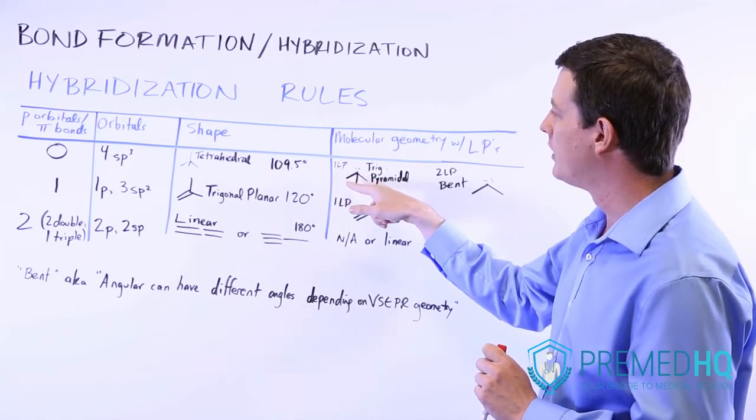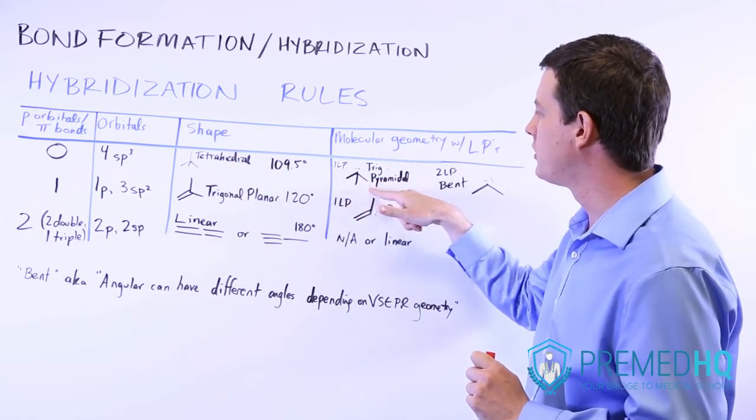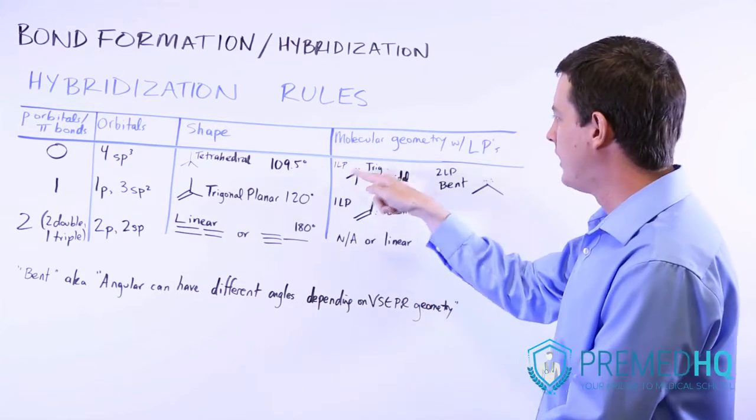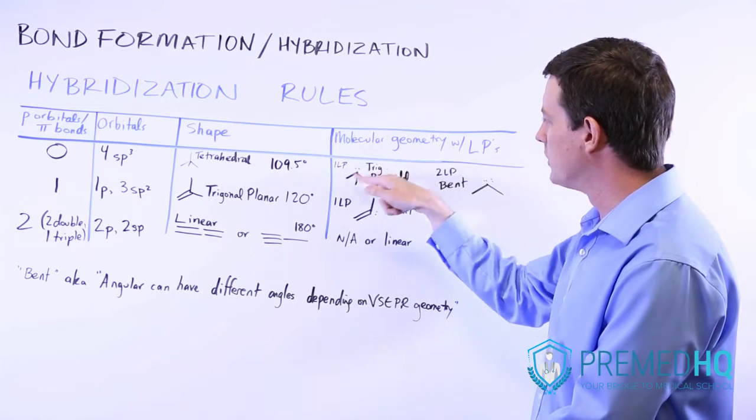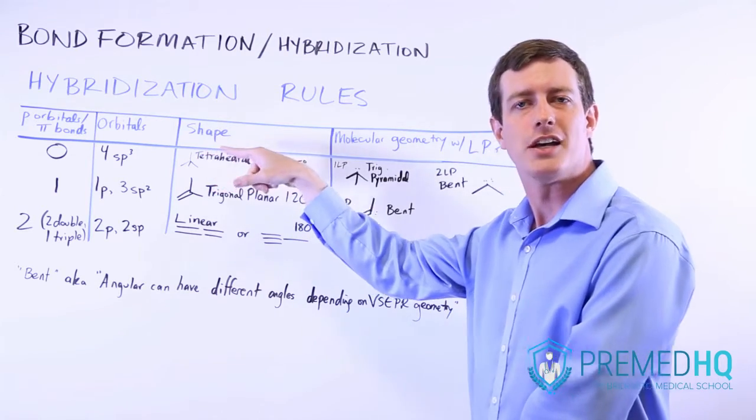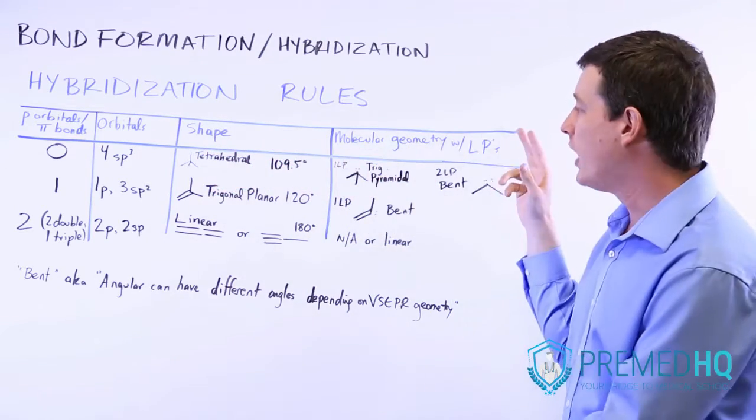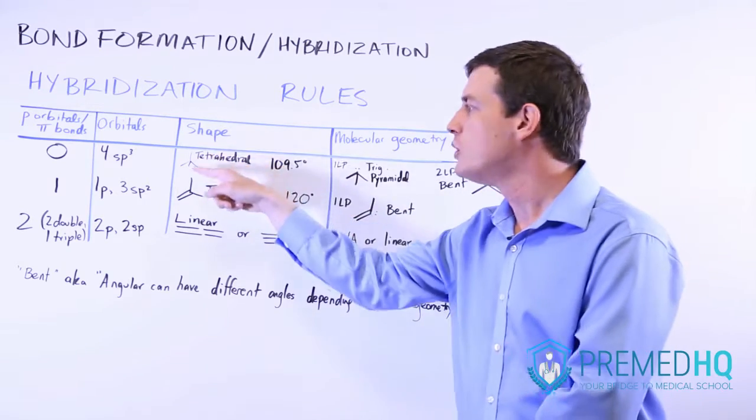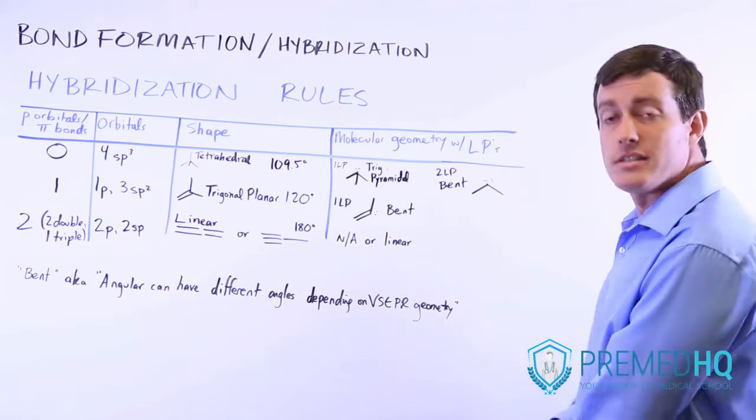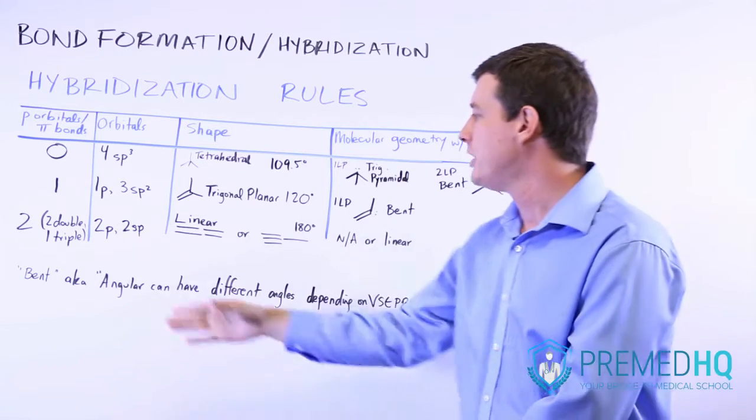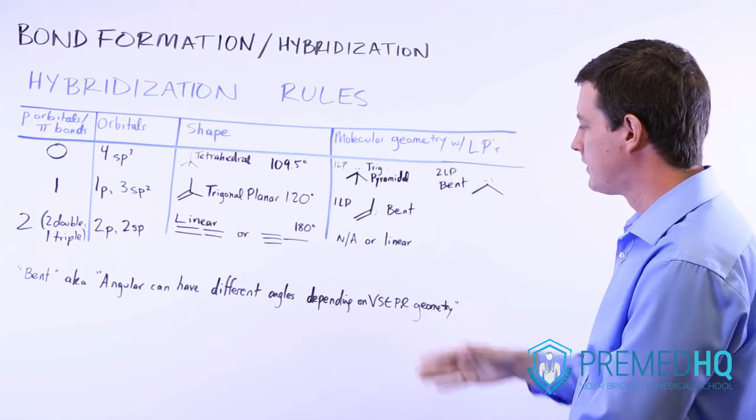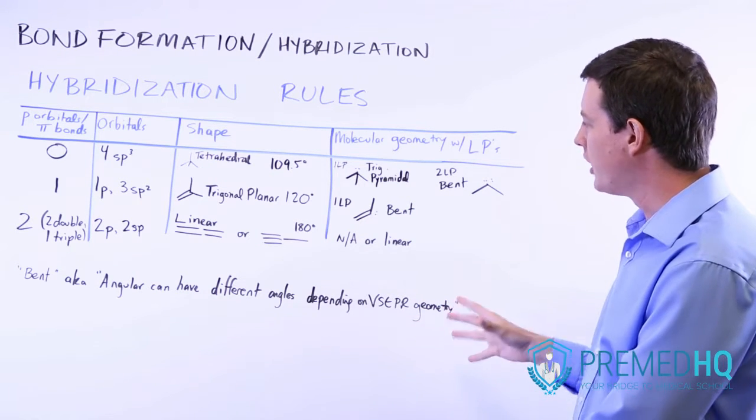If you have one lone pair, then this tetrahedron will instead turn into a trigonal pyramidal shape because it's a triangle with three bases and it looks like a pyramid. And then this lone pair up there removes the top part of that tetrahedron. If you have two lone pairs, that means you're eliminating two of the legs of this tetrahedron. And all that you're left with is a bent shape. And bent can also be known as angular.